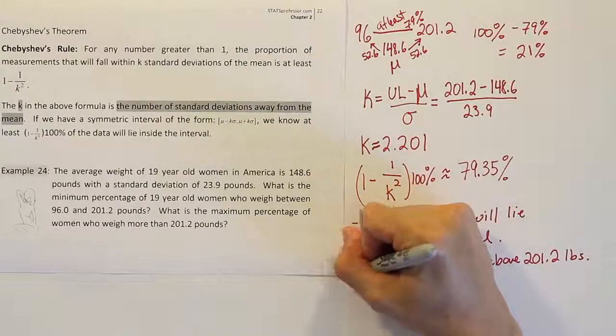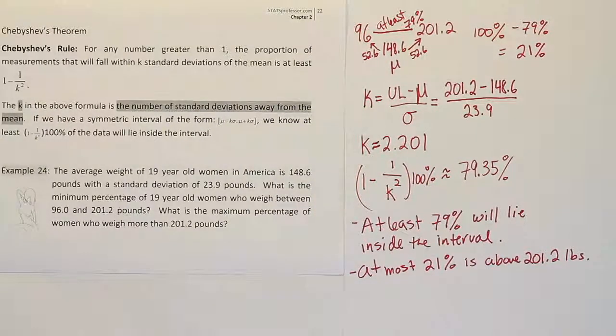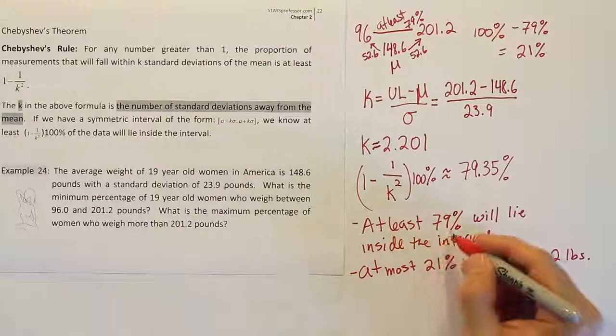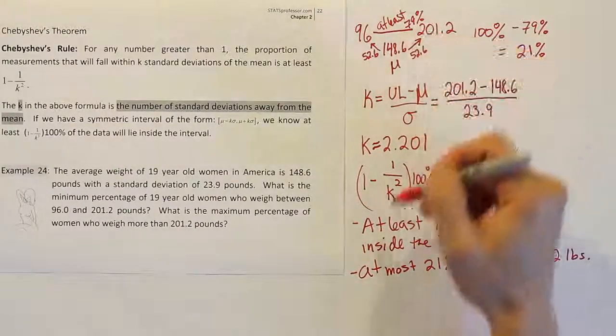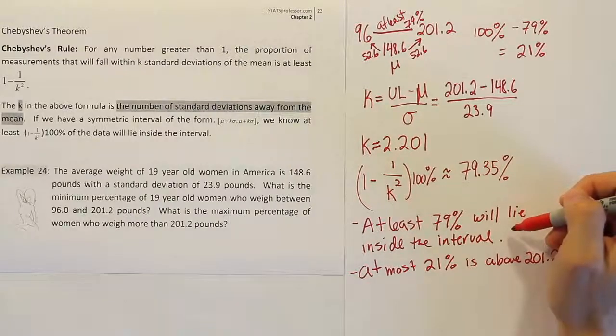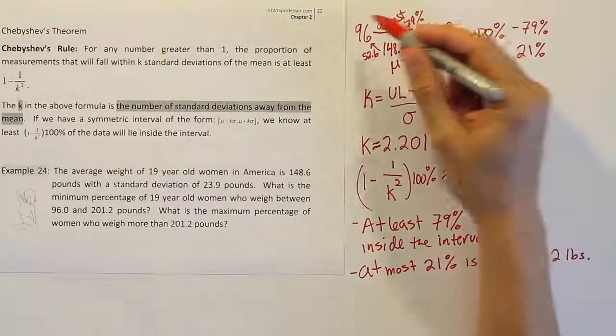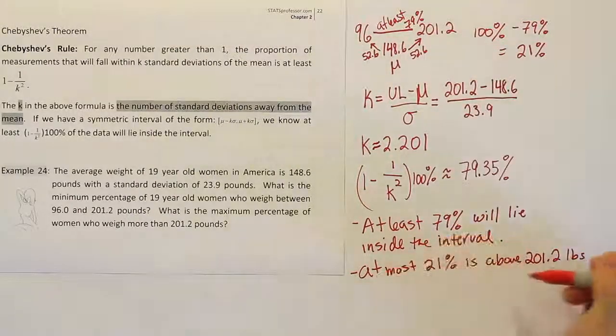So those are your two basic applications of Chebyshev's theorem. Those are essentially the two ways to use it. You can talk about what percent is inside of an interval, which is what we did in the first part of the problem. Or you can talk about what percent is outside a given interval, and that's what we did in the second part of the problem.